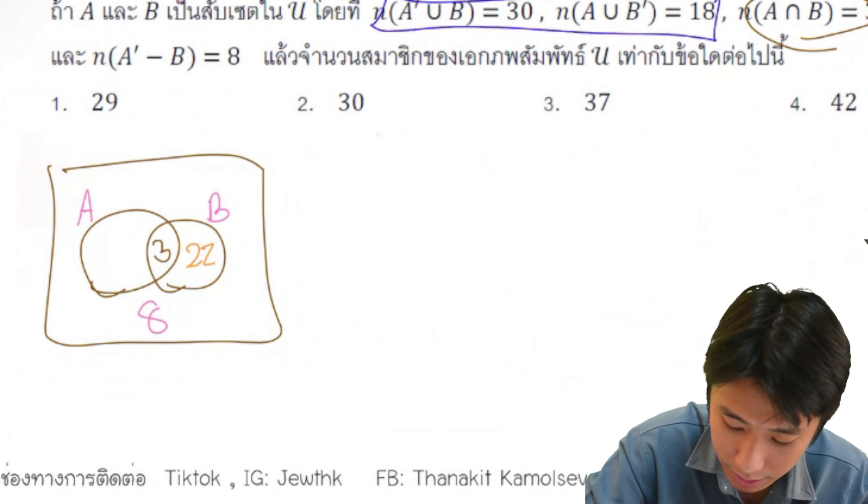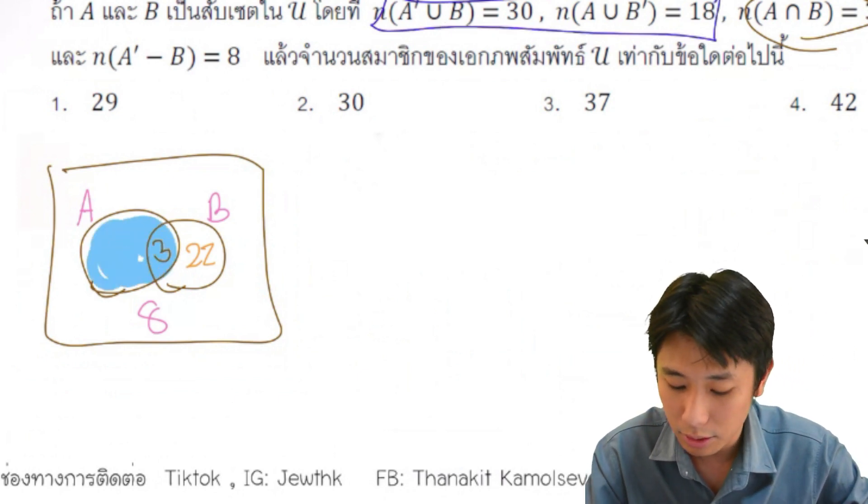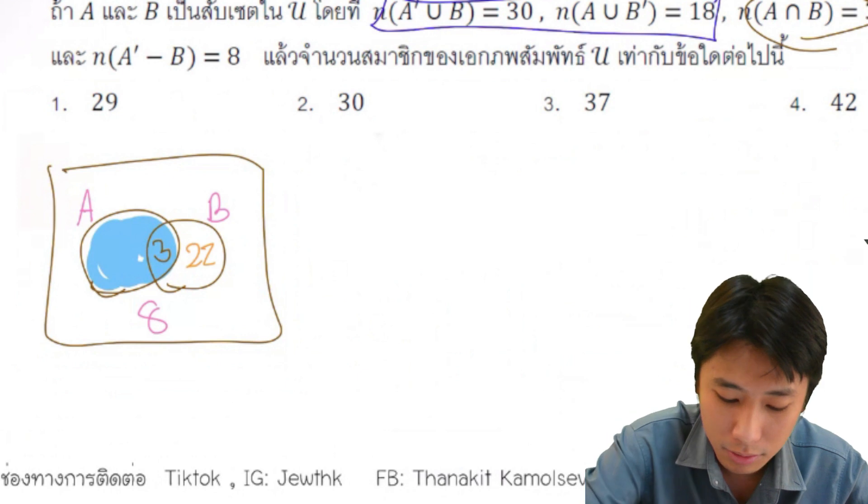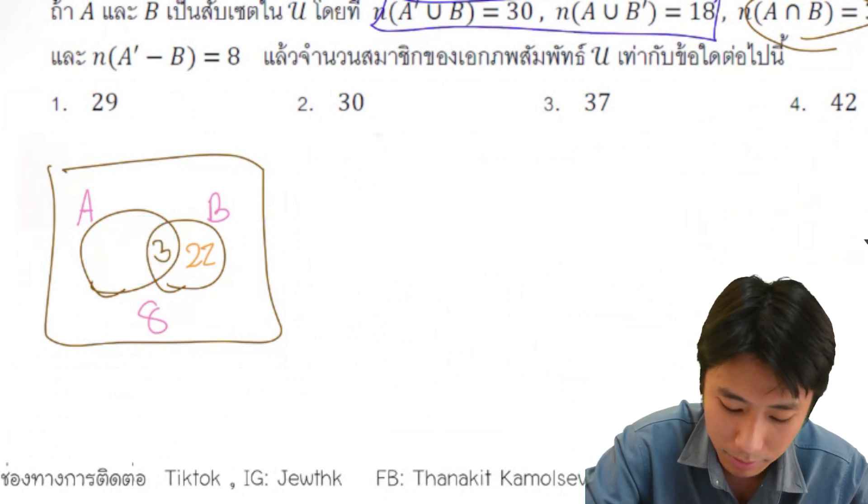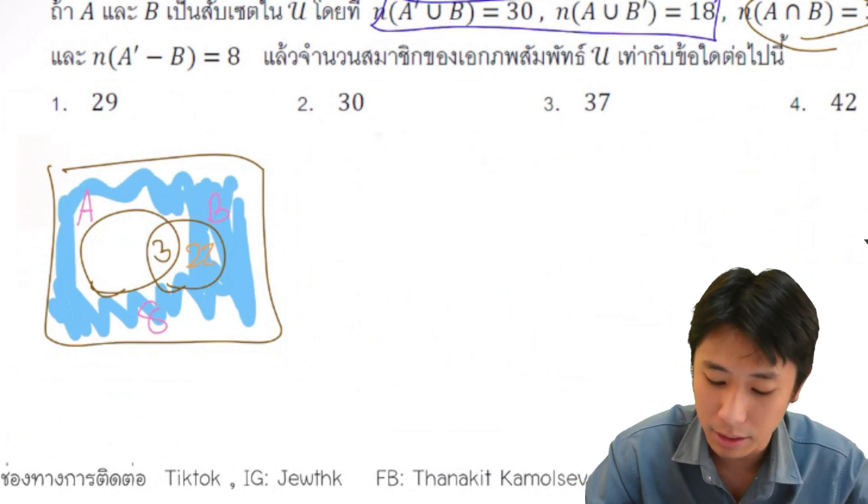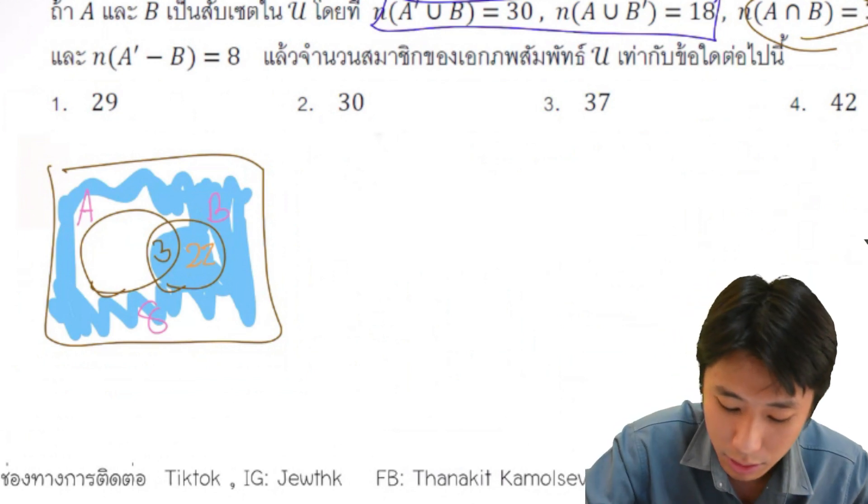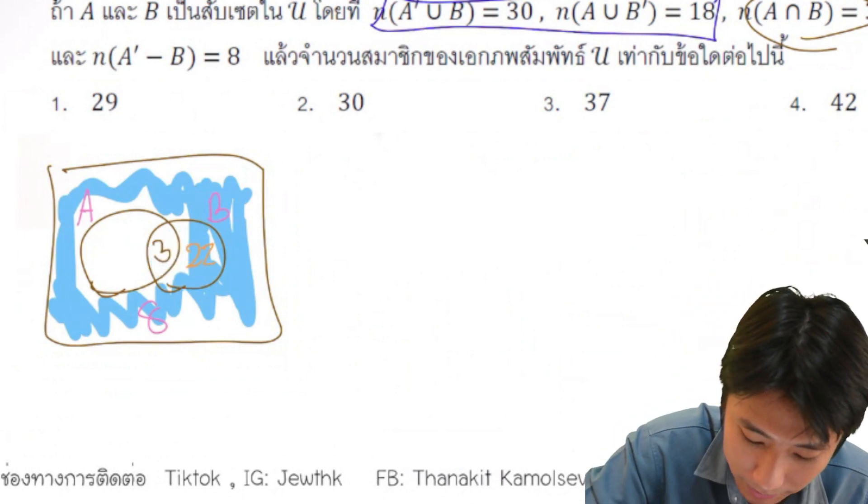Here is A. A complement union B means this region here. This one is A complement, right? And it's union with B. There will be numbers here too, but I forgot to write them. I have to write it as 3. This one is 11, this one is 19.